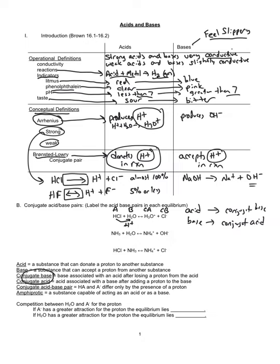For every Bronsted-Lowry acid-base reaction, we produce two acids and two bases — one of each per side. We call these acid-base pairs. The two acid-base pairs in that first reaction are: HCl and Cl⁻ as one pair, and H₃O⁺ and H₂O as the other. An acid-base pair is simply separated by a single proton — the only difference between the two should be a single H⁺.